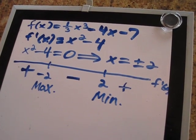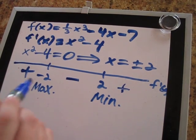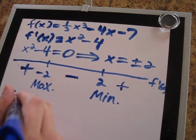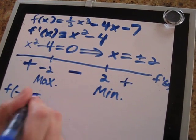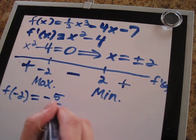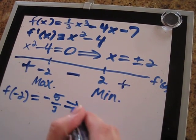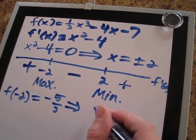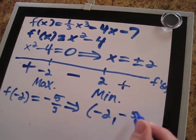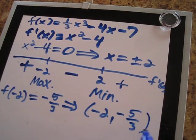Now, just to get the coordinates of those points, we would take negative 2 and 2 and plug them into the function. So first, let's find f of negative 2. And when we do that, we will end up getting negative 5 thirds. So that means that this function has a local maximum, and the coordinates of that point are negative 2, negative 5 thirds.